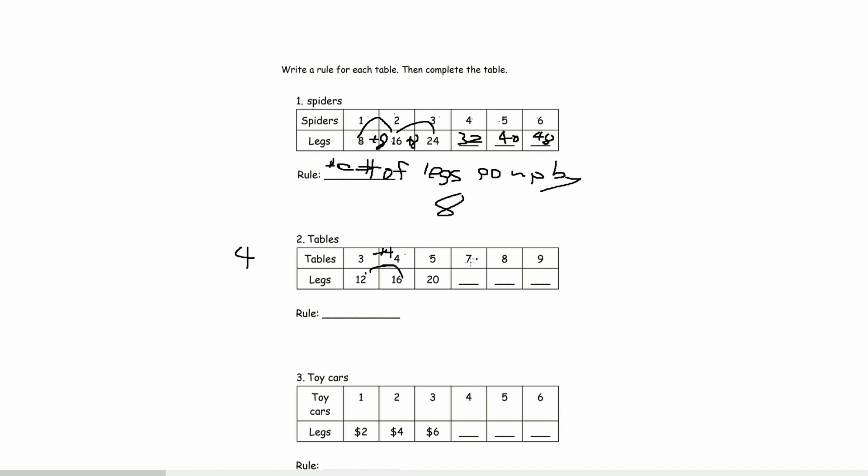And here, there's 7 tables. So that would be 7 times 4. Which is 28. And from 7 to 8, it's 1 difference.